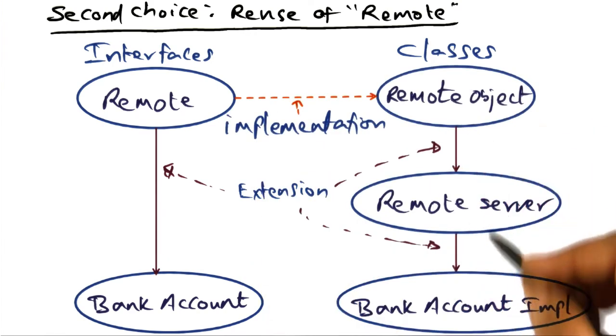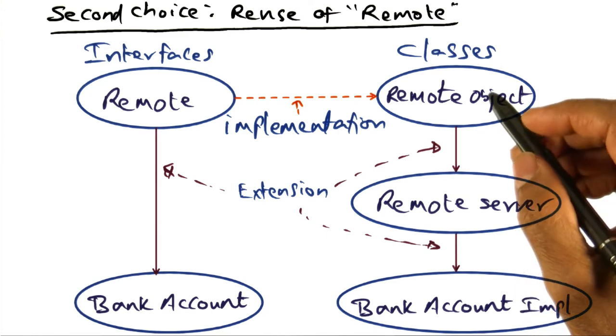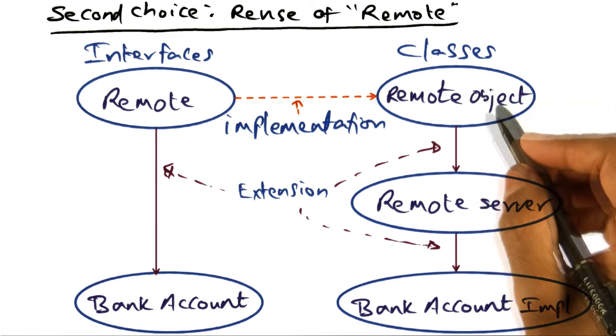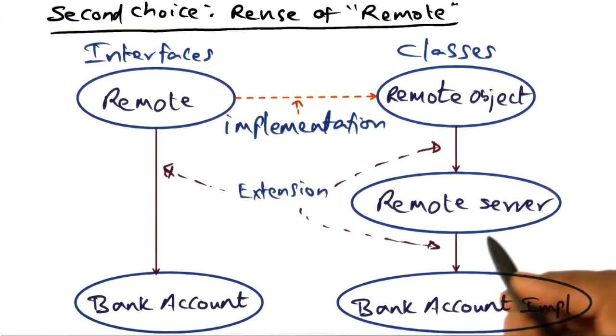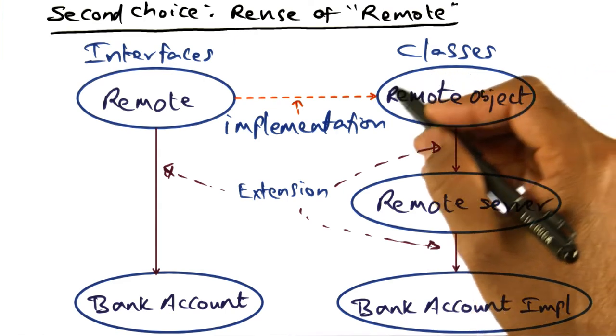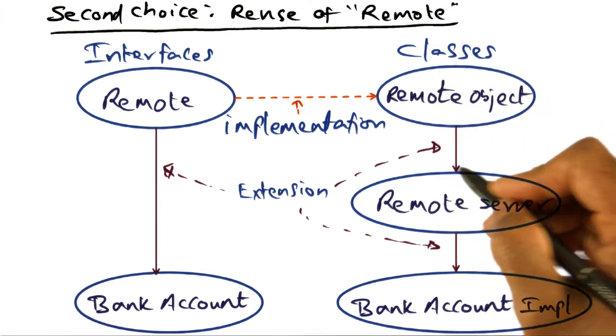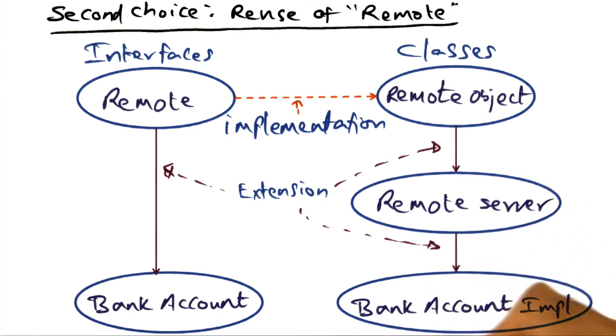However, note how the bank account implementation is actually derived. It is derived from the Java built-in classes for remote object and remote server. So you extend the remote object and the remote server in order to get this bank account implementation object.